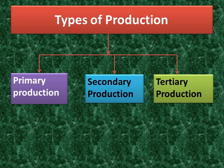Tertiary production includes all those services which enable the finished goods to be put in the hands of consumers. They are the services supplied to firms in all types of industry and directly to the consumer. For example, banking, insurance, transport, communication, and government services such as law, administration, education, health, and defense — everything comes under tertiary production.